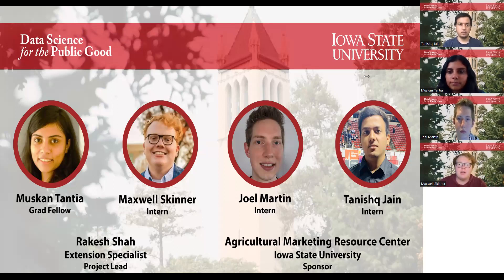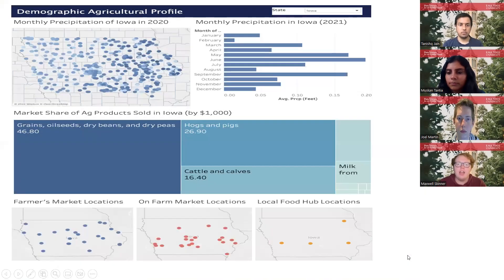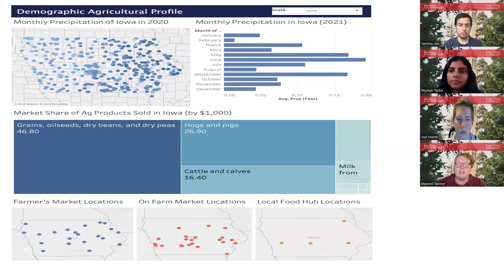My name is Maxwell Skinner. I'm a sophomore data science major at Iowa State. For the demographics dashboard I created, I used USDA data to get local food market locations and market share of agricultural products sold by state and nationally. For the beef dashboard, I used U.S. Census agricultural data, and this dashboard focuses on market trends at the national and state level from the past 10 years.